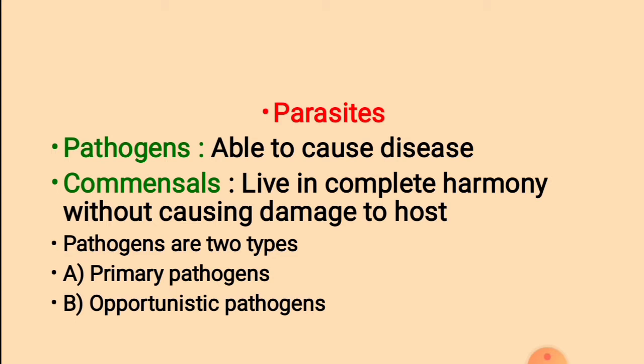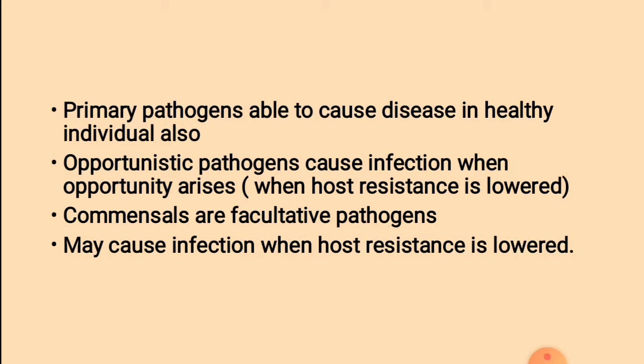Pathogens are mainly of two types: 1. Primary pathogens, and 2. Opportunistic pathogens. Primary pathogens are able to cause disease in healthy individuals. Opportunistic pathogens cause infection when an opportunity arises, that is, when the host resistance is lowered. At that time, opportunistic pathogens cause disease. Commensals are facultative pathogens and may also cause infection when host resistance is lowered.